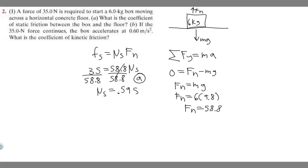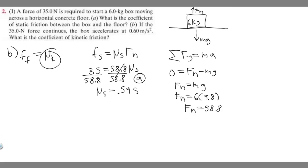Let's move on to B. B is asking: if the 35 newton force continues and the box accelerates at 0.6 meters per second squared, what is the coefficient of kinetic friction? We're going to use the same formula, except we'll use F sub k (or F sub f) for kinetic friction: F sub f equals mu sub k times F sub n. What we have to do in this case is first solve for F sub f. The sum of the forces in the x direction equals M times A.